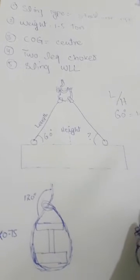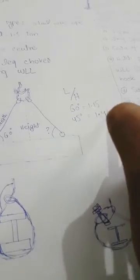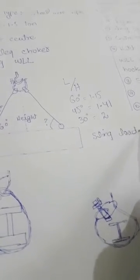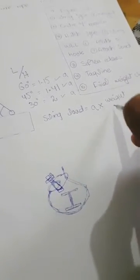For 60 degrees it is 1.15, and if you are using a 45 degree angle then it is 1.41, and for 30 degrees it is 2. This is a ratio. So the sling load is equal to this - if we consider it letter A, then sling load equals A multiplied by weight of beam or any object, divided by 2.